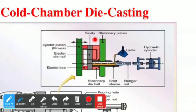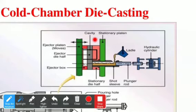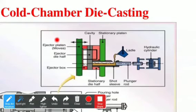The total molten metal changes its state from liquid to solid inside the cavity. In the hot chamber, the solid metal is changed to liquid in the furnace; in the cavity, the liquid metal changes back to solid. After solidification, the ejector platen moves in the backward direction and our solid casting is removed. This is a continuous process.